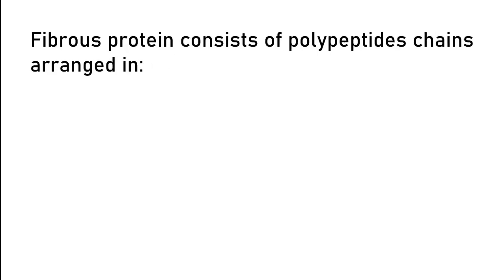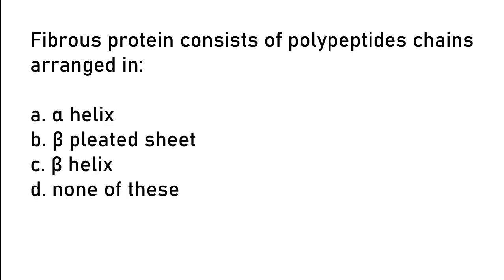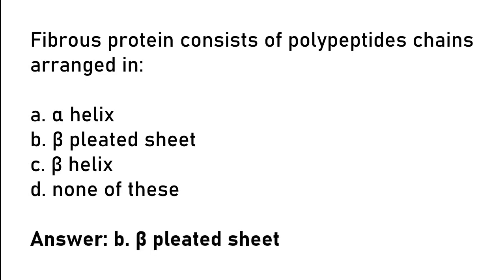Fibrous protein consists of polypeptide chains arranged in: alpha helix, beta pleated sheet, beta helix, none of these. So the correct answer is option B. Beta pleated sheet.